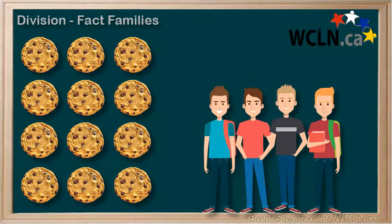We have 12 cookies to divide among 4 friends. How do we divide them evenly?